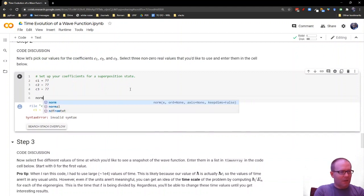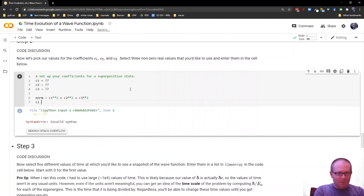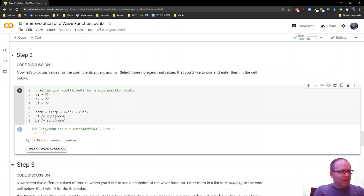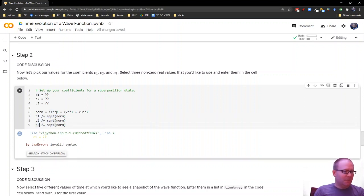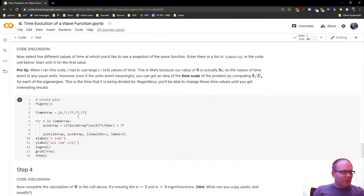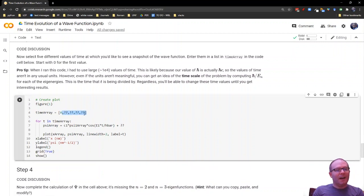Then what you're going to do is set up your coefficients. So you have the coefficient for wave function 1, coefficient for wave function 2, coefficient for wave function 3, for all three of those stationary states. Well, let's go ahead and normalize those, shall we? So we'll take the normalization here as c_1 squared plus c_2 squared plus c_3 squared. And then we'll say c_1 going to divide by square root of norm. Then do the same thing for c_2 and c_3. So we're going to take those and normalize them so you have a proper normalized wave function. Then we come down here and we are going to set up the time values that you want to look at this thing. So instead of having a formal animation, this is going to show you different snapshots of the wave function moving forward in time.